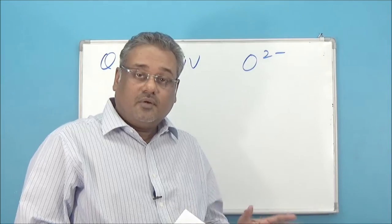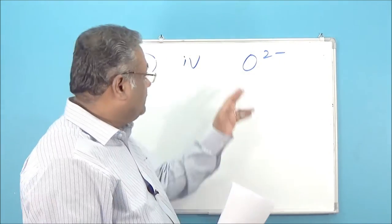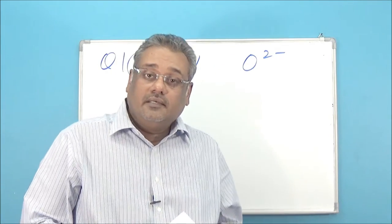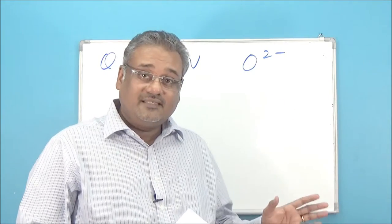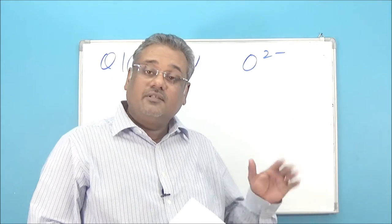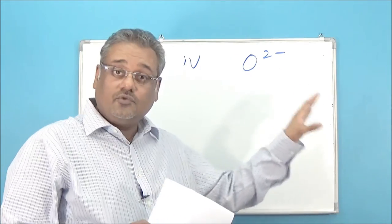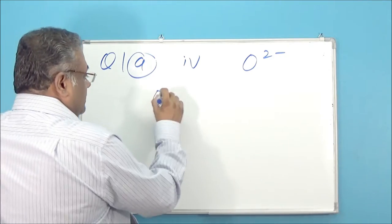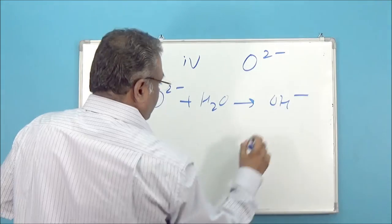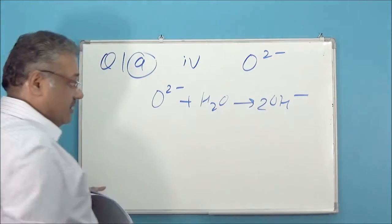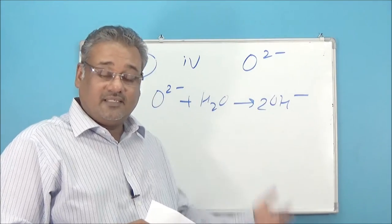The fourth question asks why it is not possible to determine the enthalpy change of hydration of the oxide ion. The oxide ion is a very small ion and therefore has a very high charge density. The problem is that it actually reacts with water to form hydroxide ions — it doesn't exist as O²⁻ (aqueous). It reacts with water to form 2 OH⁻ (aqueous). Because it doesn't remain as O²⁻ aqueous, we really can't find its hydration enthalpy.